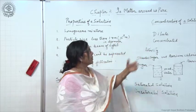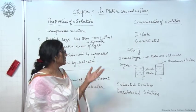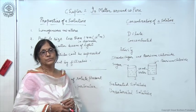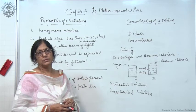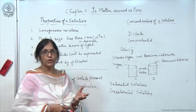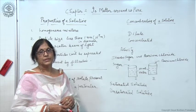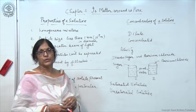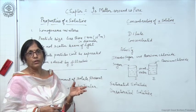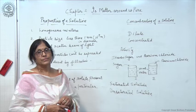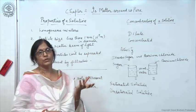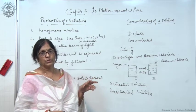By dissolving various amounts of copper sulphate in equal volumes of water, we can see that the concentration of the solution can be varied depending on the amount of solute and solvent. Dilute and concentrated solutions are formed depending upon the amount of solute in a solution — dilute means a solution containing less amount of solute, and concentrated means a solution containing more amount of solute dissolved in solvent.